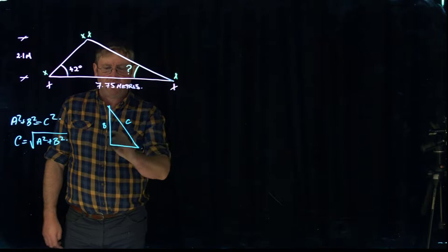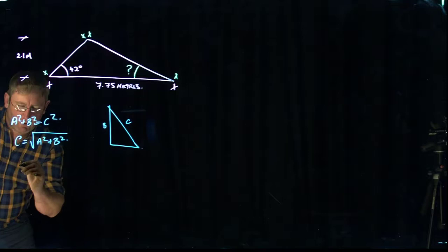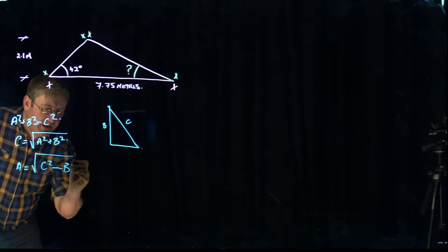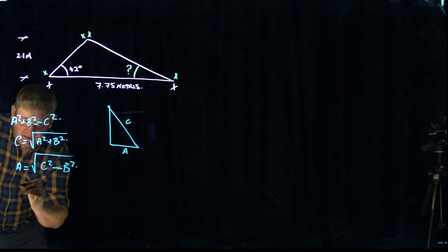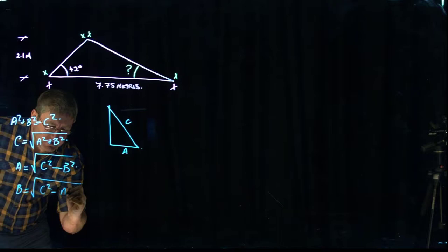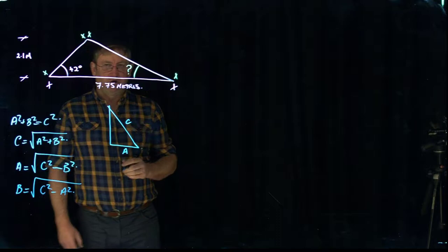So if we had the long length and a short length, we can actually determine the other length by rewriting the formula. So we want to determine what A is. A equals the square root of C squared minus B squared. And we could have A and be missing B on this side, and we would simply restate that formula as B equals the square root of C squared minus A squared. Doesn't really matter which side you call A, which side B. But given certain information, we can determine other information based on what we've got.